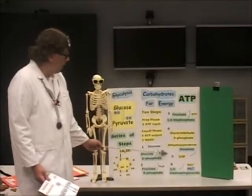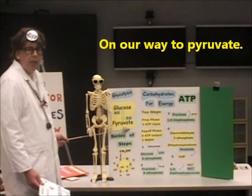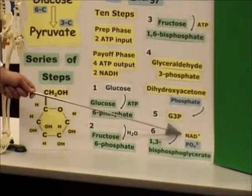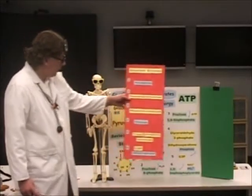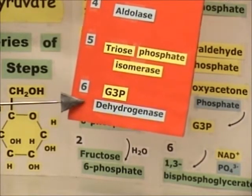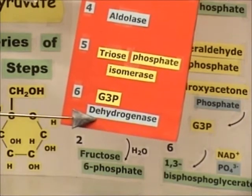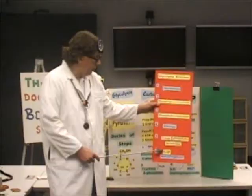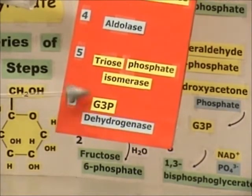In step 6 we added a phosphate and we have an oxidation-reduction reaction going as well. The enzyme is glyceraldehyde 3-phosphate dehydrogenase. In this case we have two glyceraldehyde 3-phosphates — we started out with glucose, six carbons, and each of these glyceraldehyde molecules has three carbons. Three plus three equals six, so two of these — this reaction is happening twice.